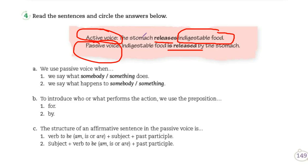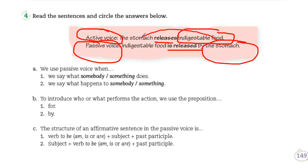En la voz pasiva, una situación le ocurre a algo o a alguien. En el ejemplo: 'Indigestible food is released by the stomach' — la comida no digerible es liberada por el estómago. Entonces, ¿quién libera la comida? ¿Quién está haciendo la acción? Pues el estómago. ¿Y a dónde está recayendo la acción? Pues a la indigestible food.